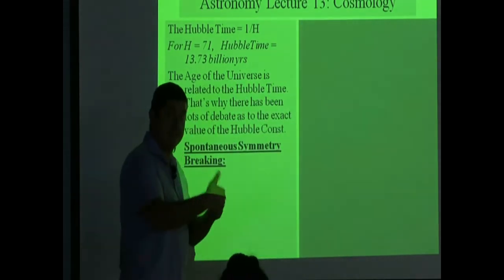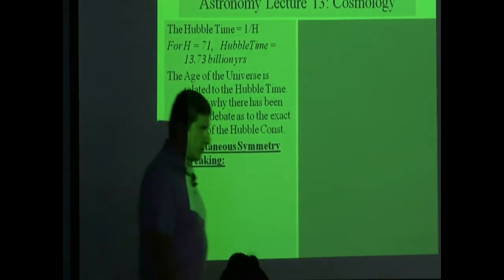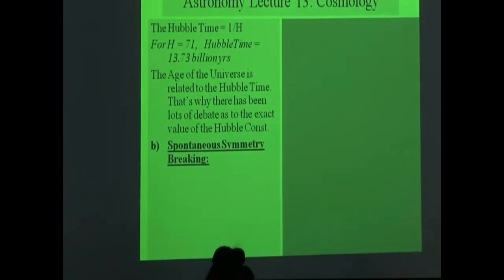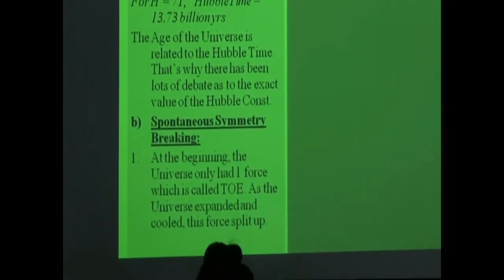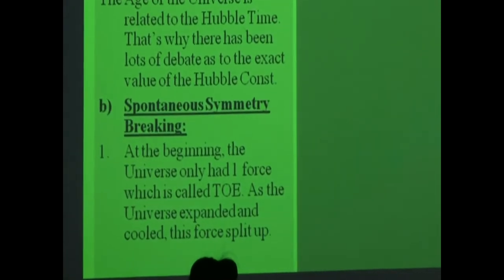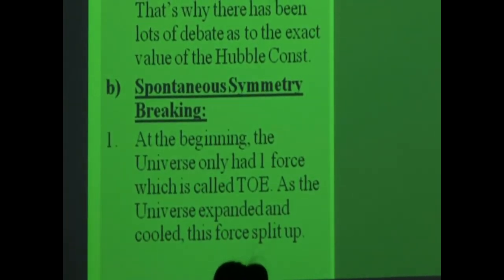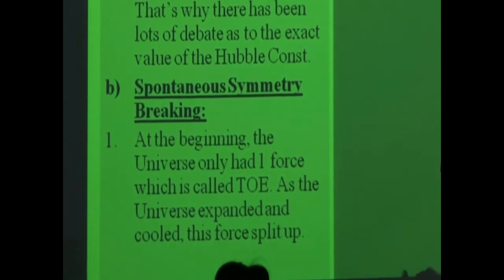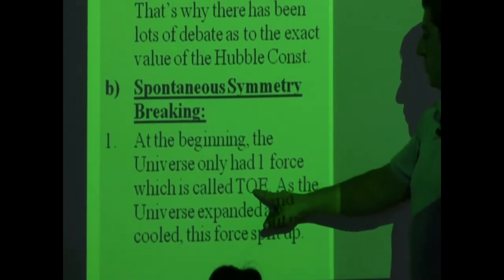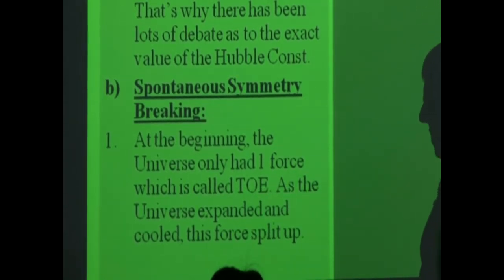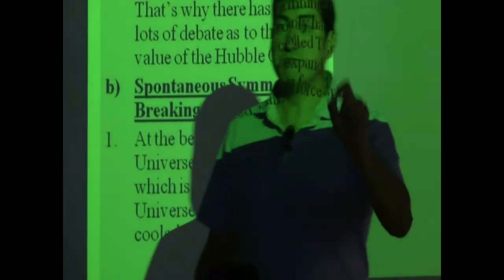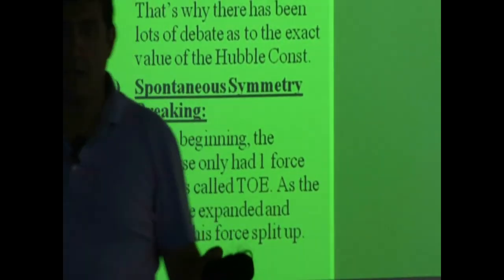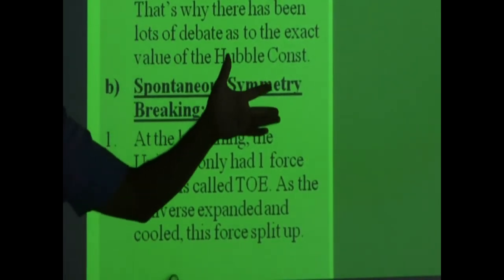We do know the events afterwards. Spontaneous symmetry breaking is the first thing. At the beginning, when the universe was just very, very tiny and small, it had a lot of energy and it had one force of nature called the mother force. We call it TOE — Theory of Everything — because if we can understand that mother force, we will have understood the theory of everything.